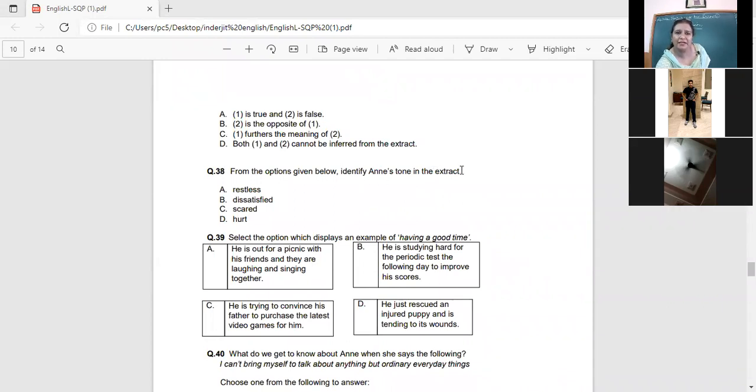From the options given below, identify Anne's tone in the extract. Is she restless? Who is a restless person? Lots of energy. You can't sit in one place. I want to do this, I want to do that. They're restless. Dissatisfying. She has so many things, but even then, is she scared of making friends or talking or is she hurt? Is she hurt? Has something happened and then it is hurt? Hurt would generally reflect what? Maybe some incident has happened. Maybe she did try to make friends and no one was friendly with her. Has she mentioned that? So what is it then? How many of you said hurt? Because we love to feel hurt. This is the in thing nowadays.